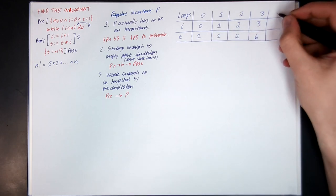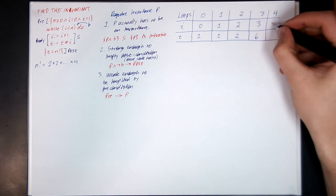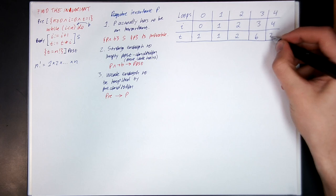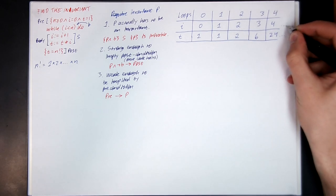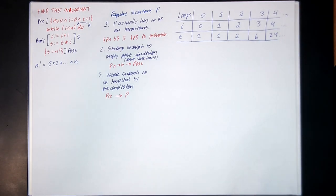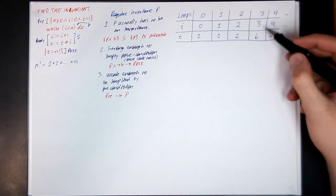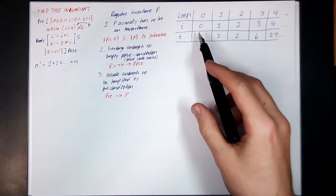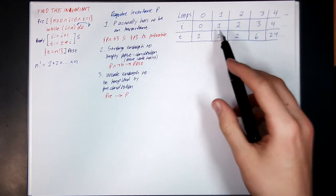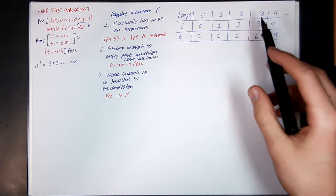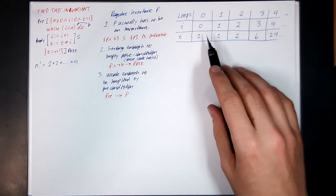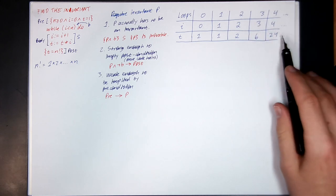We'll do one more: in the fourth iteration, increase i by 1, and then 4 times 6 is 24. So we want to conjecture a pattern — some sort of pattern we can write down that relates i and t such that this predicate is true. i counts up by 1 each time: 0, 1, 2, 3, 4. And t seems to have this interesting pattern: 1, 1, 2, 6, 24. The next one would be 24 times 5, which is 120.